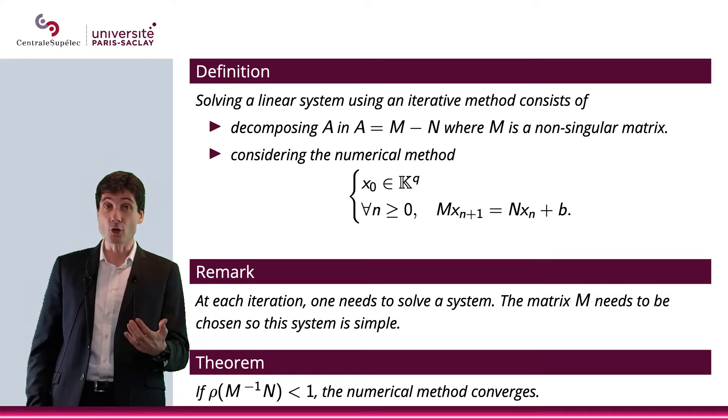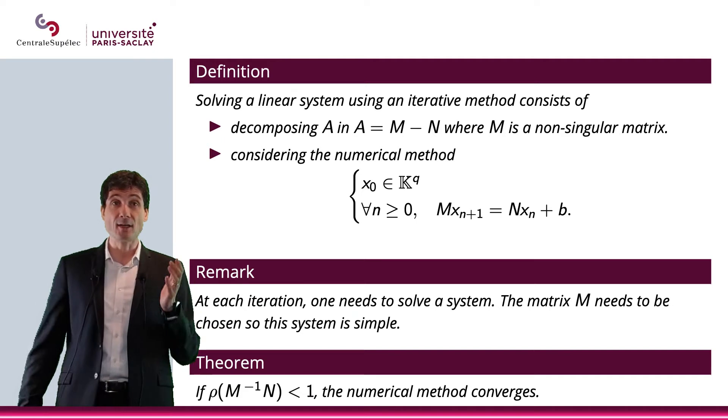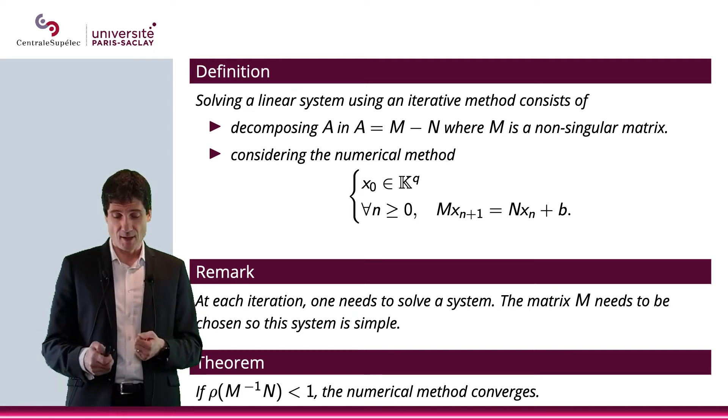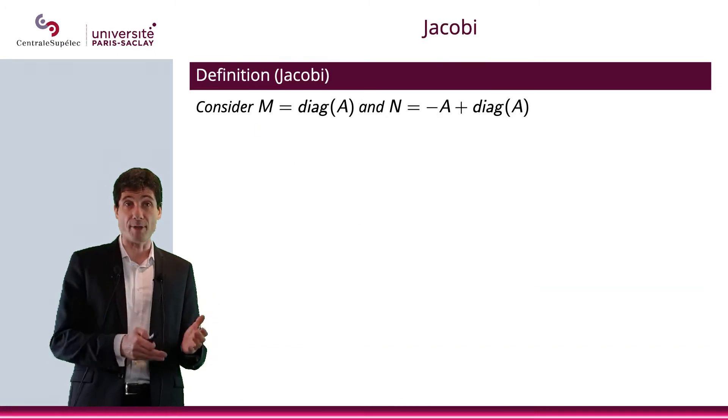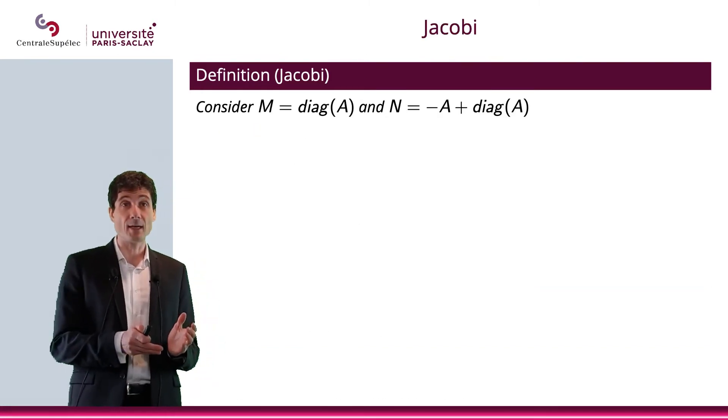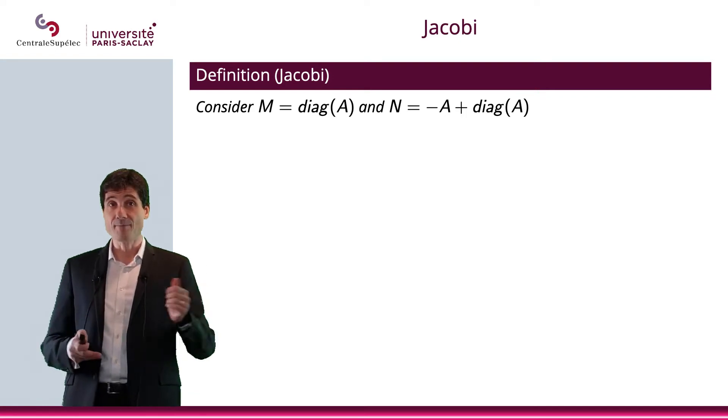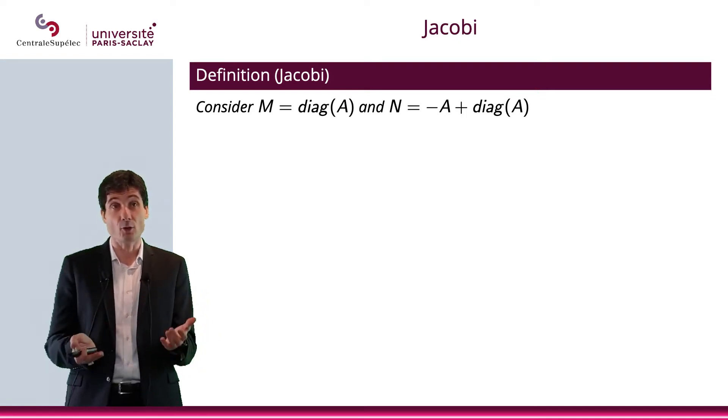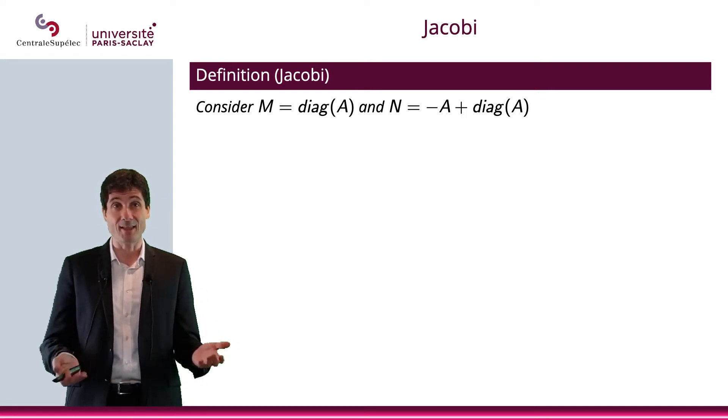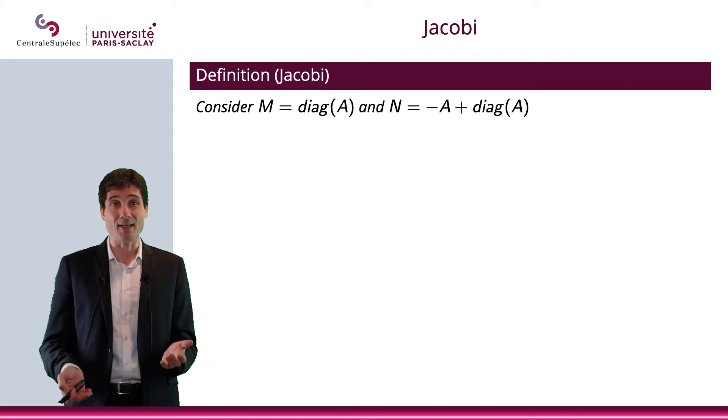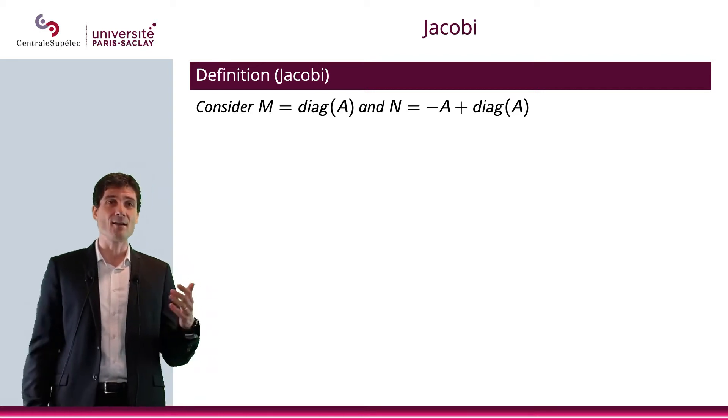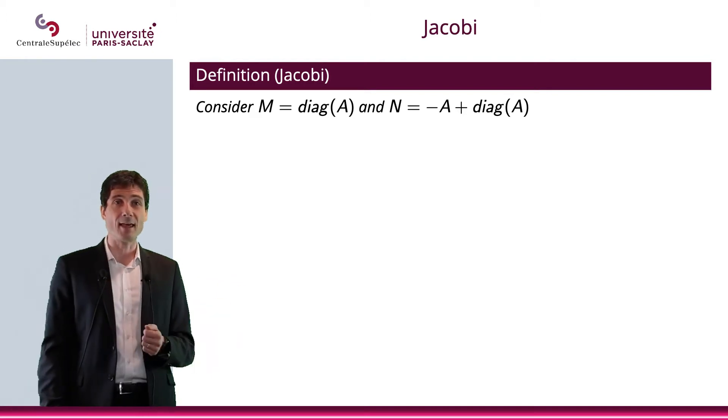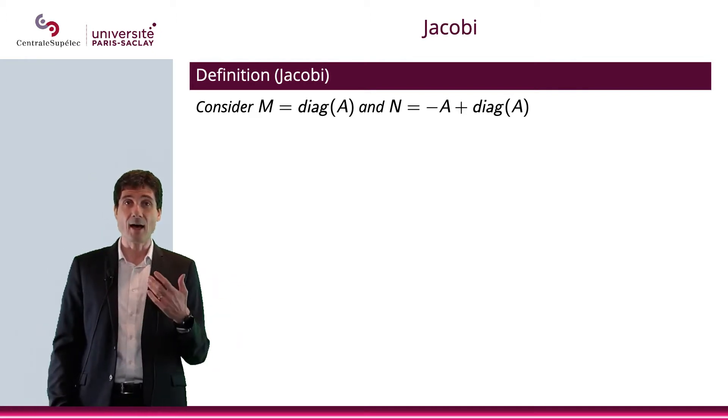All right, so now we need to choose an M and an N that are suitable. The first possible choice is Jacobi, where you're going to choose M, which will be the diagonal terms of A, and N, which, well, once you choose M, obviously N is, at this point, is set. It's basically minus A plus diagonal of A.